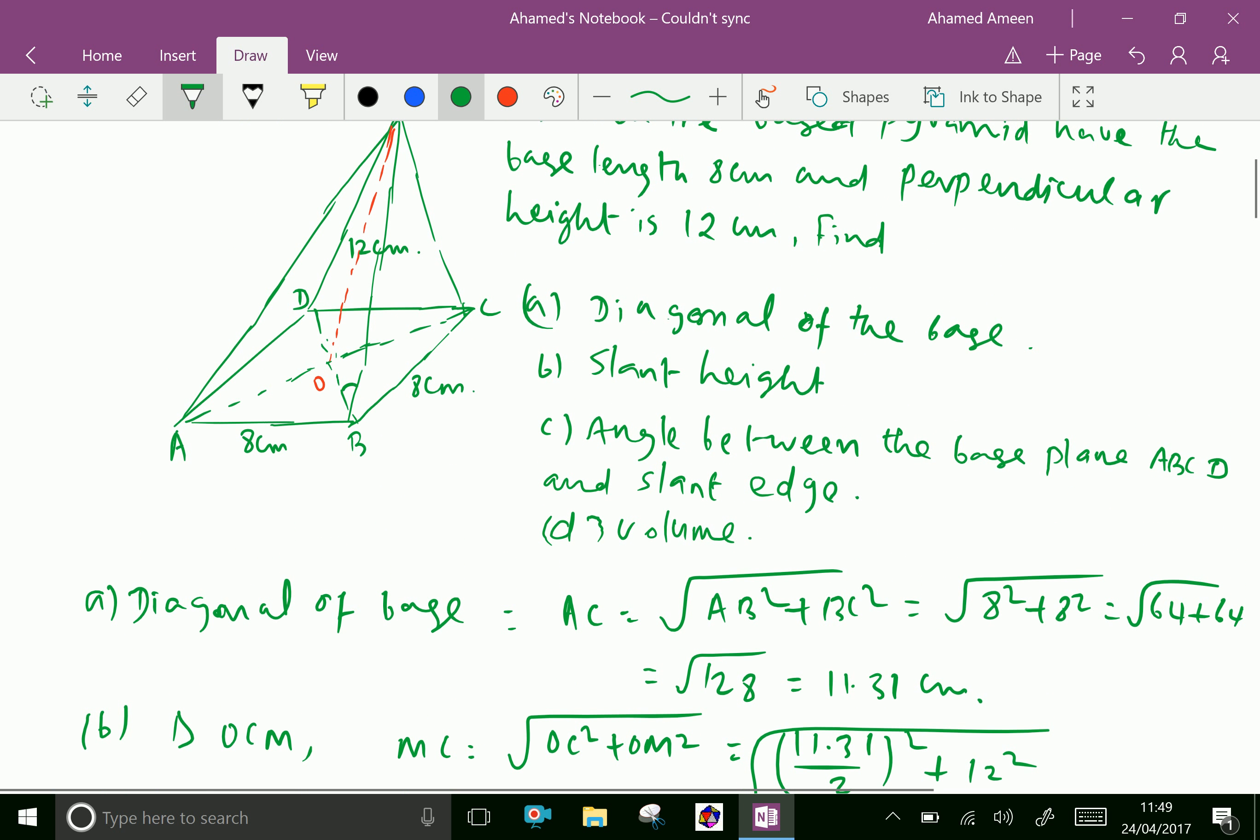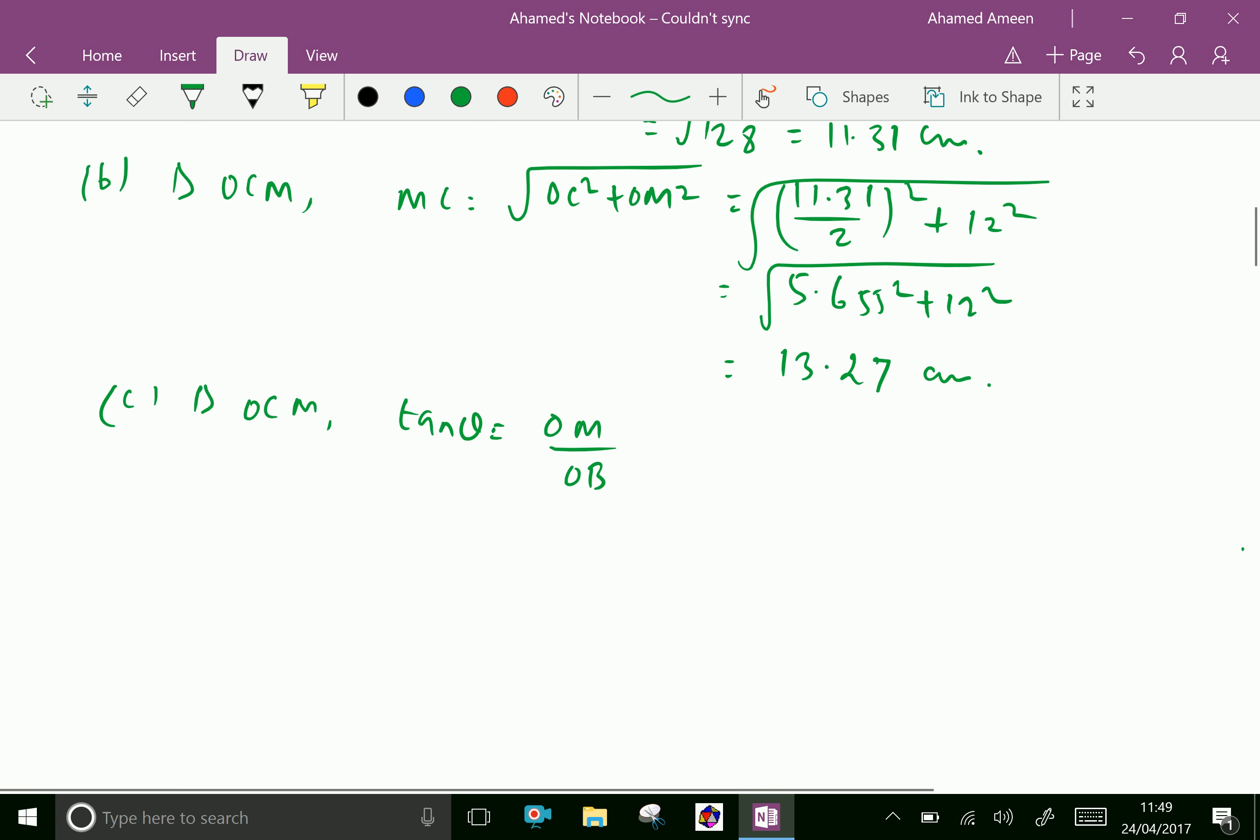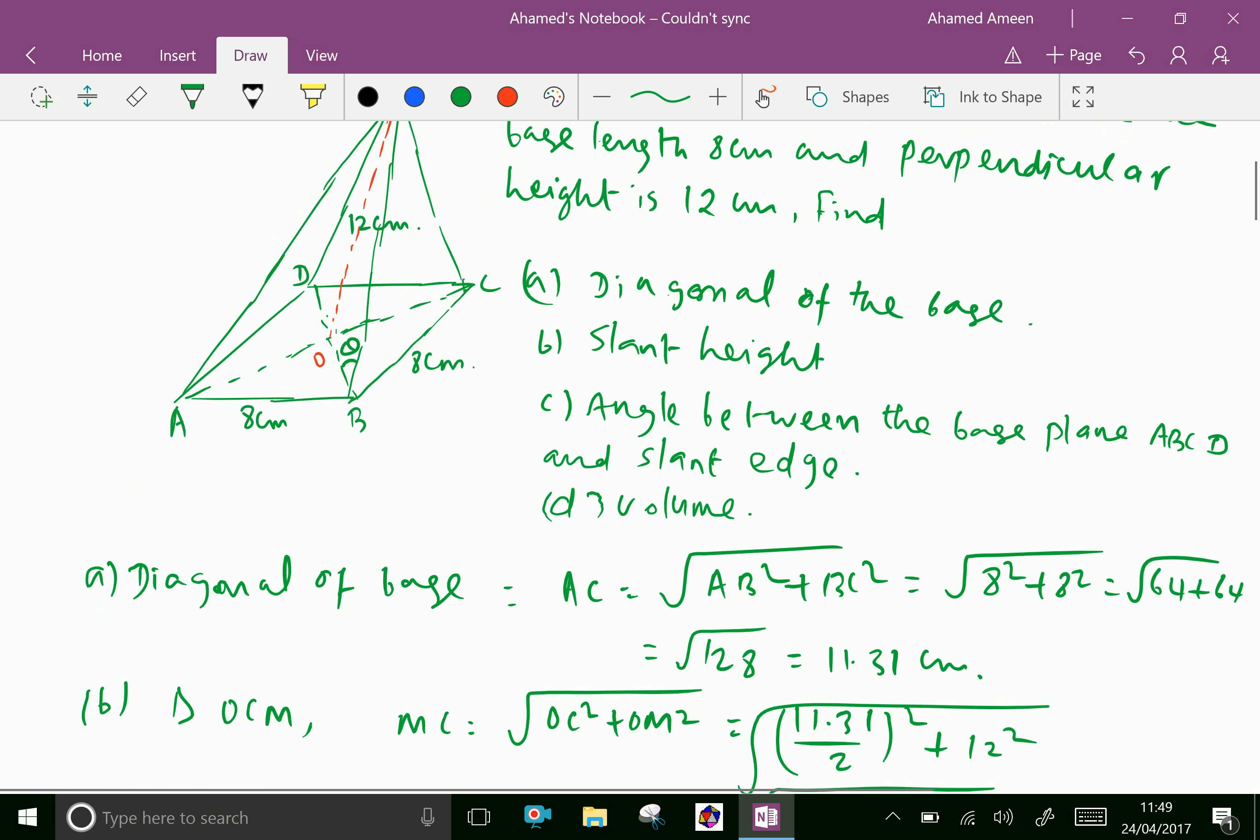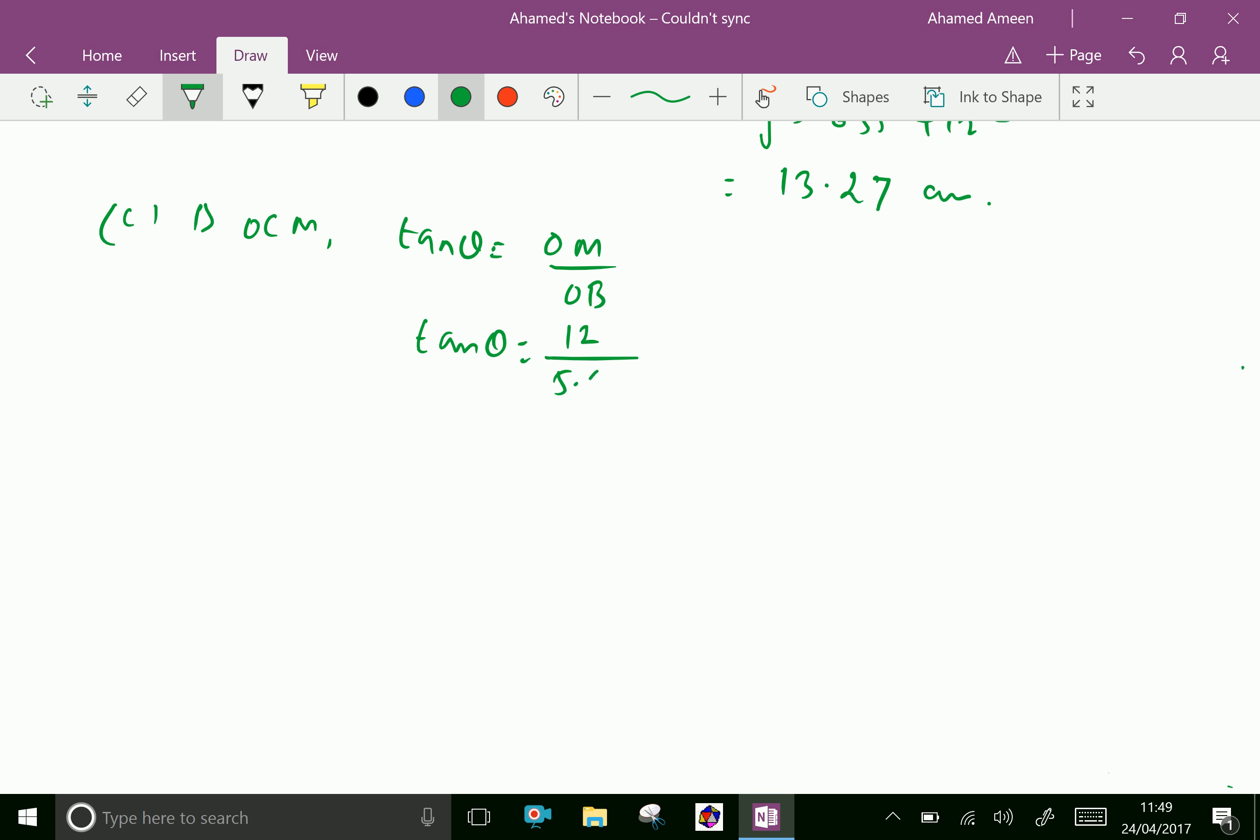Tan theta equals OM over OB. Then tan theta equals OM, which is 12 centimeters, over OB, which is 5.655, which gives 2.122. Therefore, theta equals tan inverse of 2.122, which gives 64.77 degrees approximately.